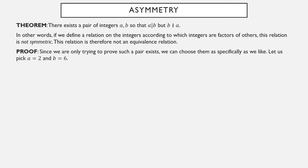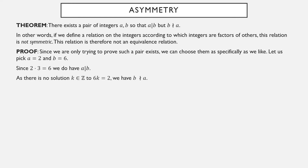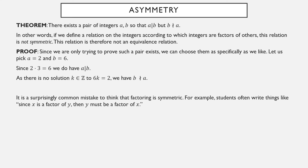We do have to prove that as well. We only need to show such a pair exists, so let's make a specific choice: a equals 2 and b equals 6. Since 2 times 3 equals 6, 2 is a factor of 6. But we cannot solve 6 times k equals 2 — 6 times 0 is too small, 6 times 1 is too large, and there are no integers between 0 and 1. Therefore 6 is not a factor of 2. This is a remarkably common error — thinking factoring is symmetric — but the factoring relationship works in one order but not the other.